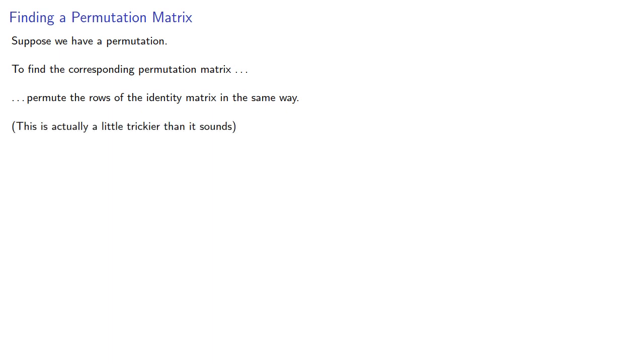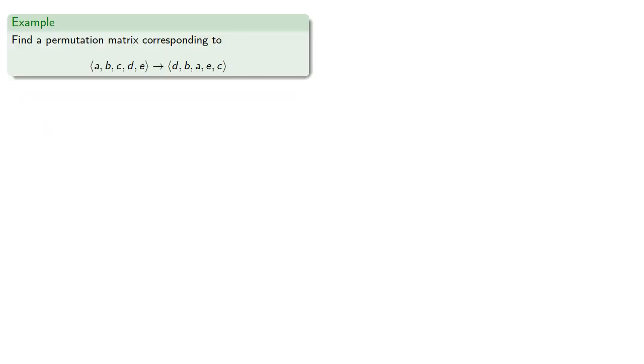This is actually a little trickier than it sounds. So suppose we want to find a permutation matrix corresponding to the permutation (a, b, c, d, e) goes to (d, b, a, e, c). It's important to keep in mind the permutation is the rearrangement. So while we could read this permutation as A becomes D, that's not the permutation.